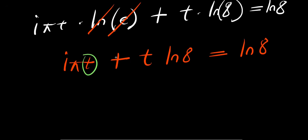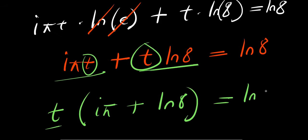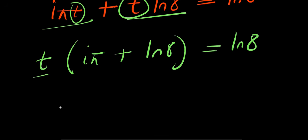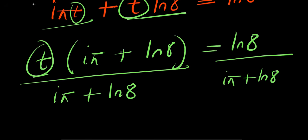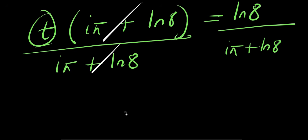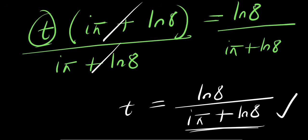Now I factor out T: T times the quantity i times pi plus natural log of 8 equals natural log of 8. To isolate T, I divide both sides by i times pi plus natural log of 8. This cancels on the left, and our answer is T equals natural log of 8 divided by i times pi plus natural log of 8. This is our answer using this particular method.